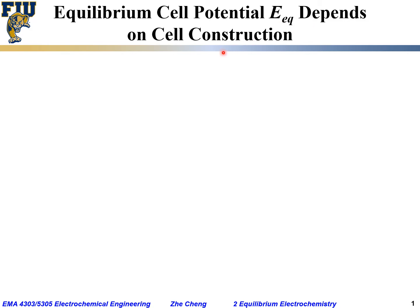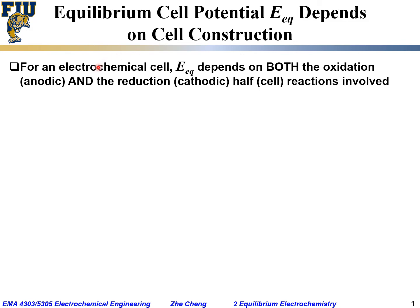Researchers did experiments and found out that E_EQ actually depends on cell construction. This means the measured electrochemical cell equilibrium potential depends on both the oxidation or anodic half-cell reaction as well as the reduction or cathodic half-cell reaction involved in the electrochemical cell.